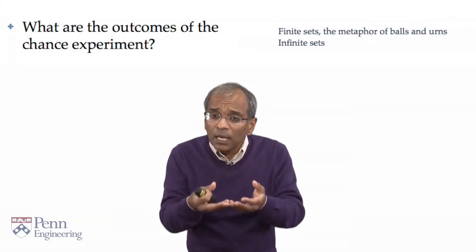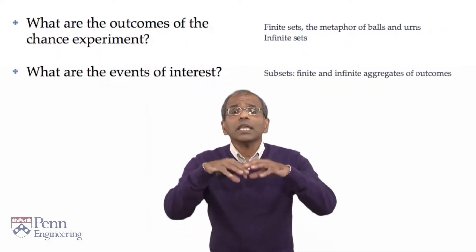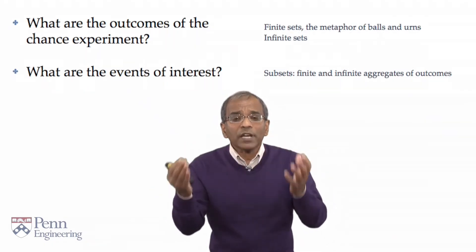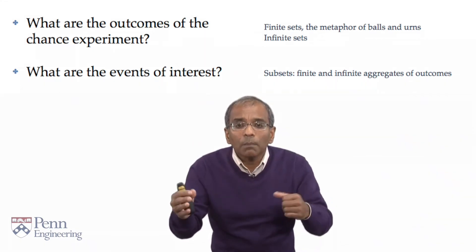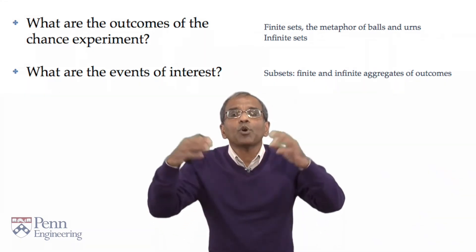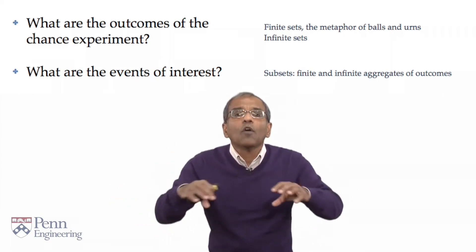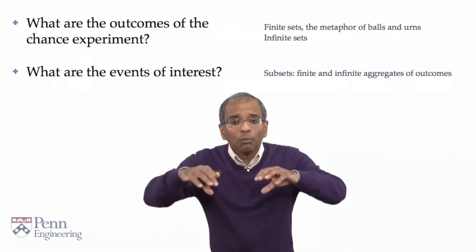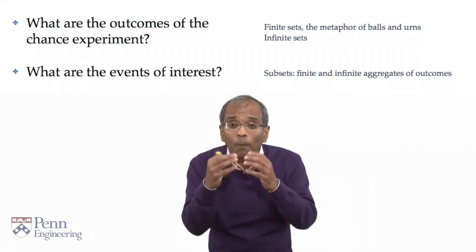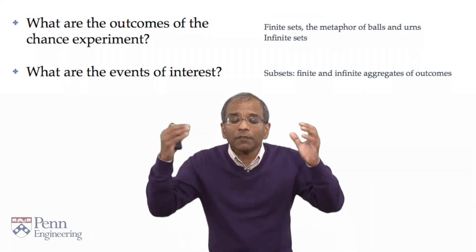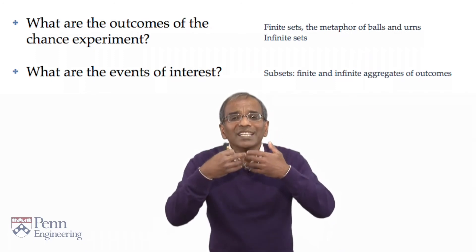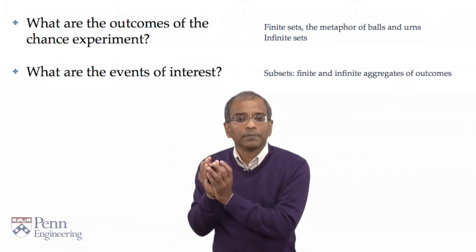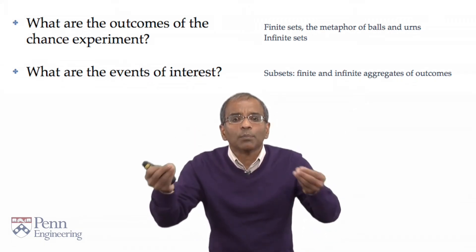With this in hand, the next question is: what are the events of interest to me? If you go back and look at our examples, every event is identifiable by a sub-collection of the possible outcomes — by an aggregate of the possible outcomes. Your next question then should be: can I model my chance problem mathematically and compactly, identify the outcomes, and then identify the sub-collection of those outcomes which trigger the events of interest to me? This is always the next step in the program.